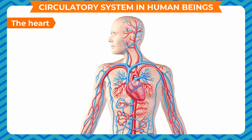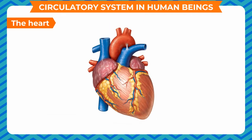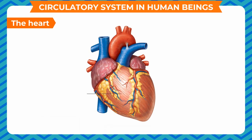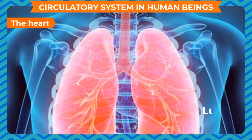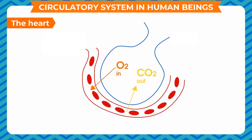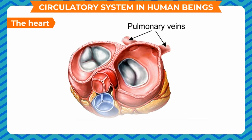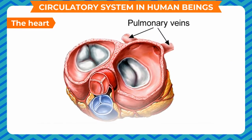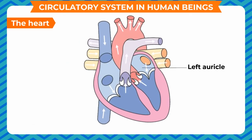Deoxygenated blood comes to the heart through the veins and reaches the right auricle. From here, the blood is pumped into the right ventricle. The pulmonary artery carries the blood to the lungs for oxygenation, where out-diffusion of carbon dioxide and in-diffusion of oxygen takes place. The oxygen-rich blood then reaches the heart through the pulmonary vein, and oxygenated blood enters the left auricle.